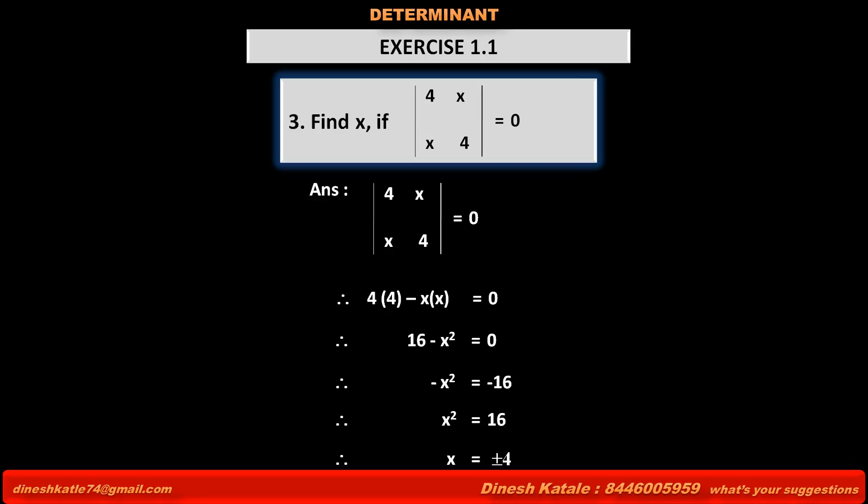Therefore, the equation becomes 4 into X minus 1 means the product of the numbers of principal diagonal minus 3 into 2, the product of the numbers of the secondary diagonal, is equal to 3. Therefore, 4X minus 4 minus 6 is equal to 3.